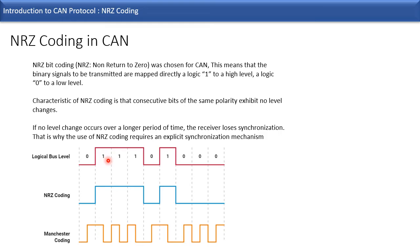For example, if we have three high levels, in NRZ coding all three consecutive high level bits are represented as high. But in Manchester coding, there is a polarity change for each bit — in the next half bit timing there is a polarity change. So when we use NRZ coding in CAN, if we have same polarity bits for a longer period of time, it loses synchronization.